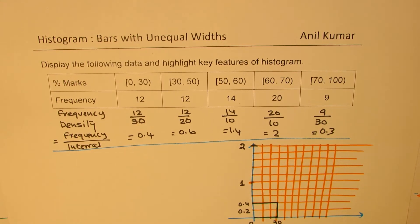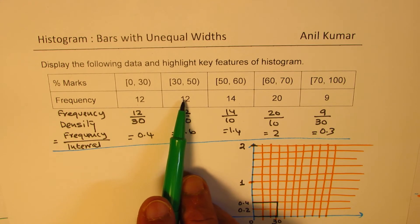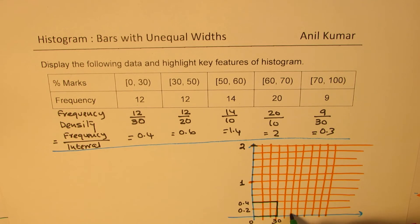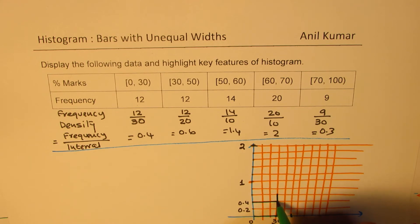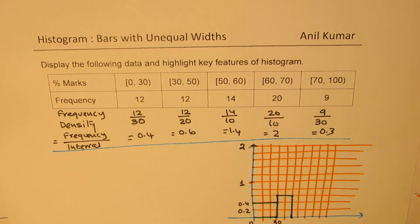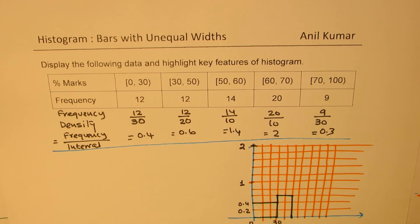I'd like you to pause the video and complete this histogram, then compare with my results. The next bar is from 30 to 50, same frequency of 12 but the density is 0.6, so the bar will be higher. For the same frequency we have different heights, but the area is the same: 20 times 0.6 gives 12, and 30 times 0.4 also gives 12.